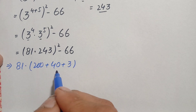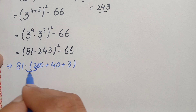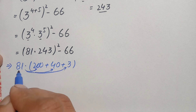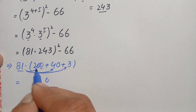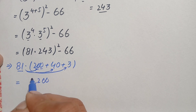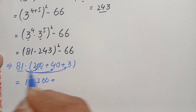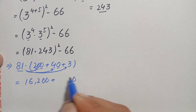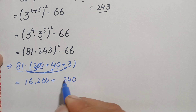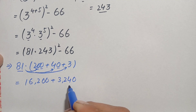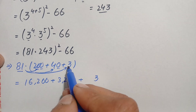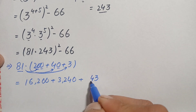We can break 243 as the sum of 200 plus 40 plus 3, and easily multiply 81 with each part. 81 times 200 is 16,200. 81 times 40 is 3,240. And 81 times 3 is 243.